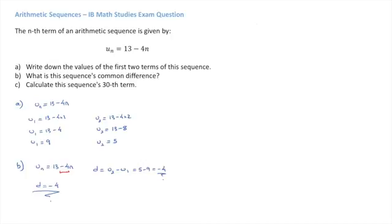Finally, question c asks us to calculate the sequence's 30th term. To do that, we replace n by 30 in our formula. So u30 = 13 - 4(30). That leads us to 13 - 120. Finally, we find u30 = -107.